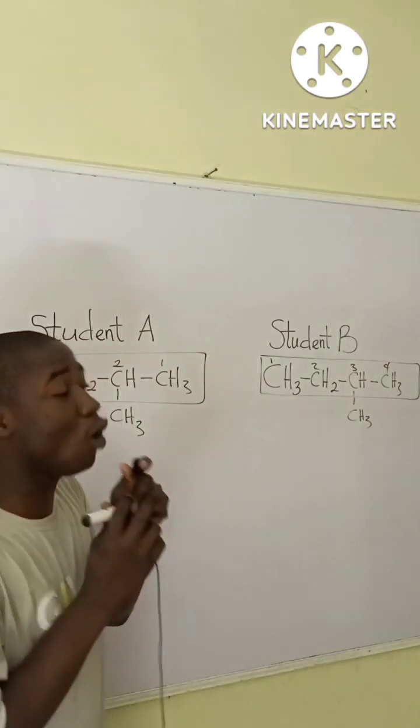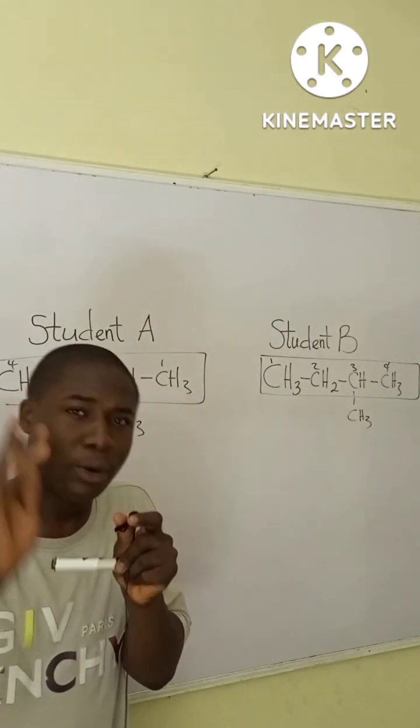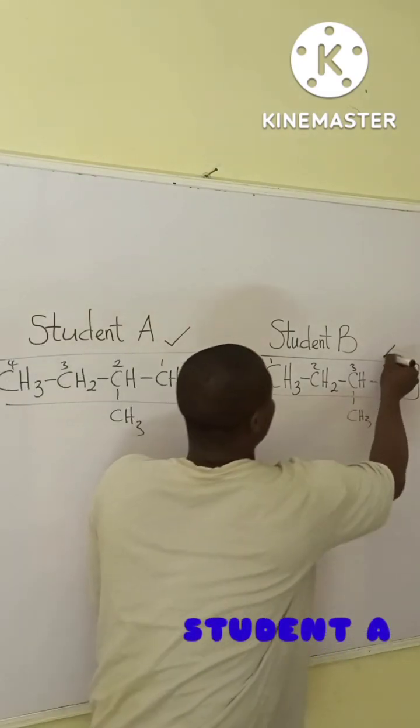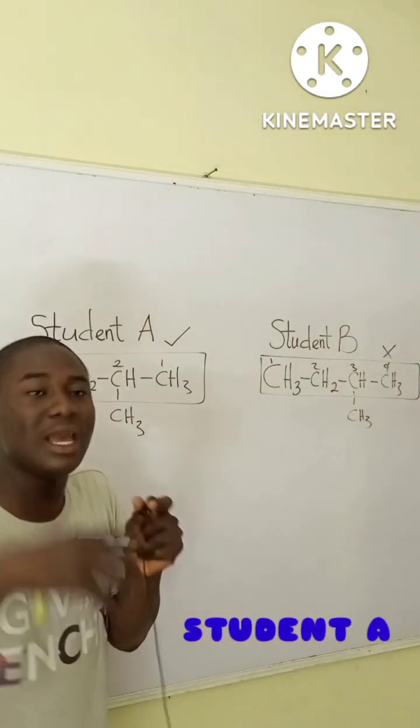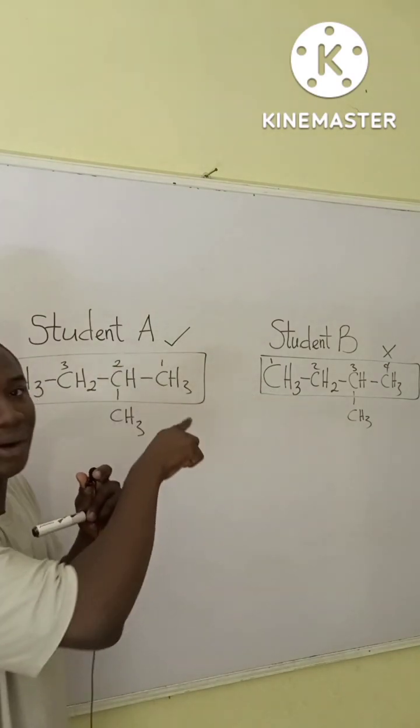So, the question will now be, which of the students actually got the numbering correctly? It is student A and not student B. So, the question will now be, why is student B wrong and why is student A correct?